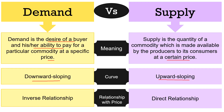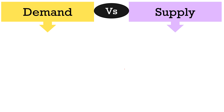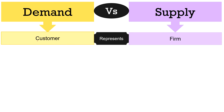When it comes to the relationship with price, demand has an inverse relationship — as the price of the commodity increases, the quantity demanded decreases and vice versa. In contrast, supply has a direct relationship with price: with every increase in price, quantity supplied increases and vice versa. While demand represents the customer side, supply represents the firm, i.e., the producer side.